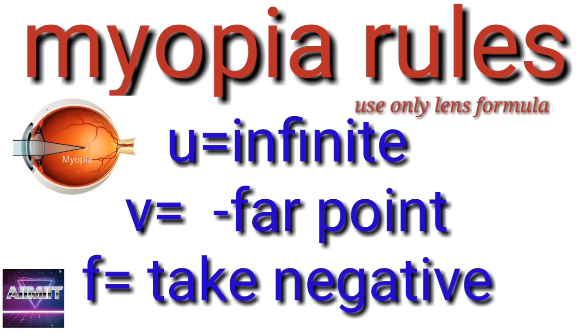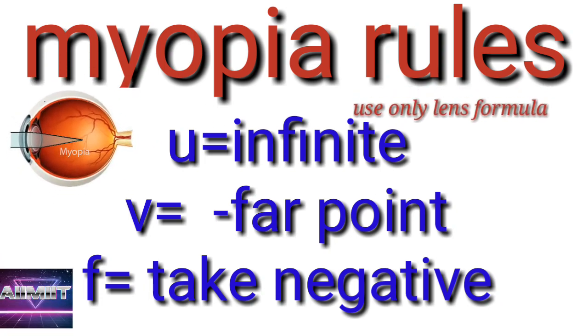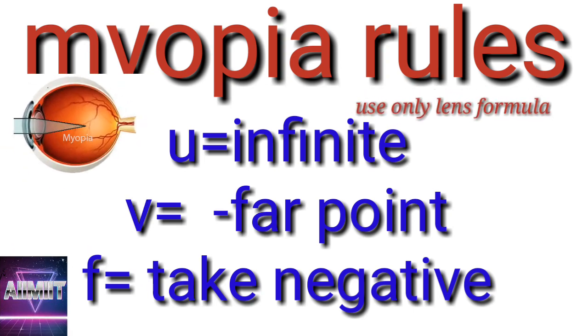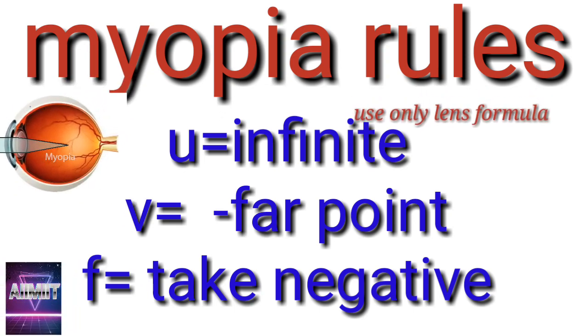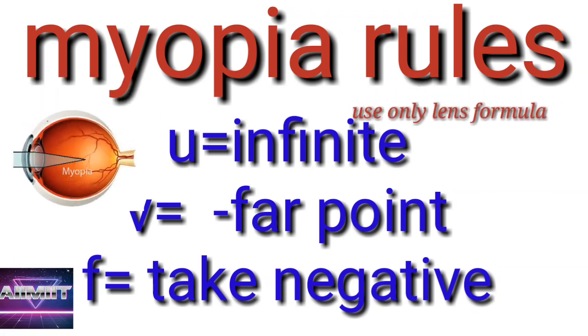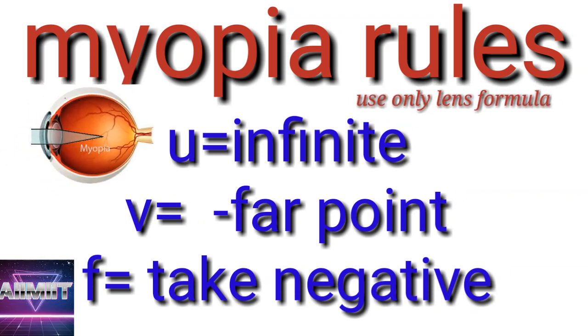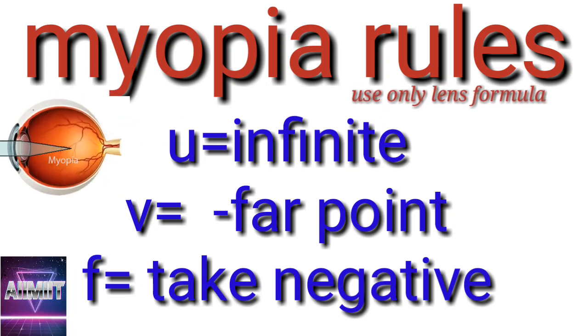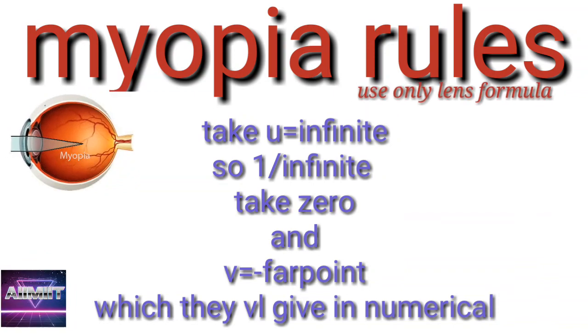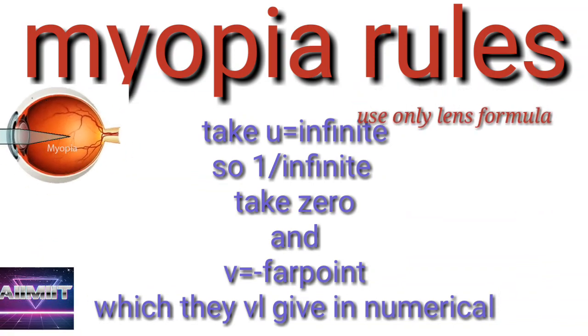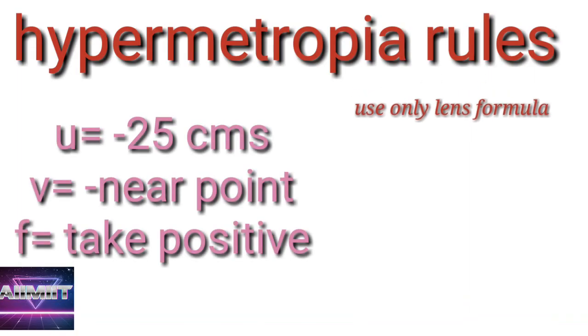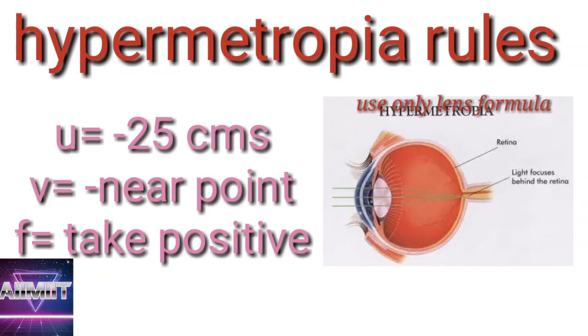Coming to the myopia rules, as you can see on the video, take object distance U infinite and image distance minus far point and take F negative. Remember, again, again, again, I am saying very, very important. Don't keep any sign for the value which you are finding. And when you are taking U, object distance infinity, 1 by infinity, take it as 0. And V is minus far point which they will give in the sum itself.